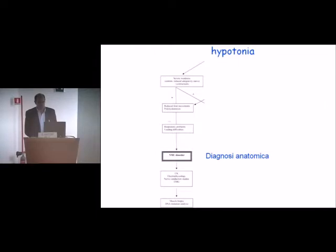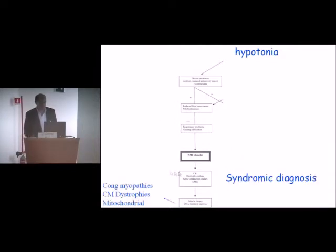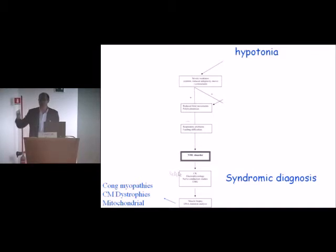Going back to our flowchart: in myotonic dystrophy and in SMA, biopsy is not needed — and this also applies for myasthenia. In all other cases, you perform a muscle biopsy, and this will give you more information on which type of congenital myopathy, congenital muscular dystrophy, mitochondrial disorder, or glycogenosis you are dealing with.